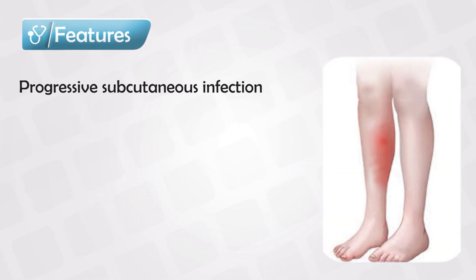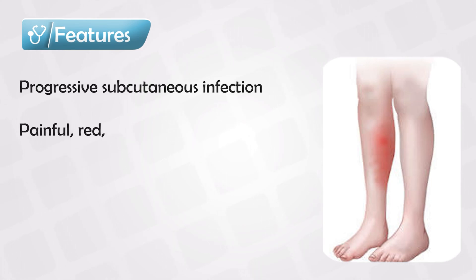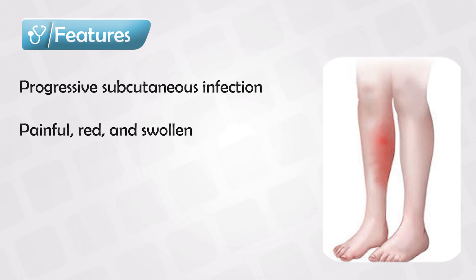Cellulitis is a progressive skin infection that starts underneath the skin, and this can spread exponentially underneath the skin. It is acutely painful, and the patient may also have fever, chills, and redness or erythema in the surrounding area.